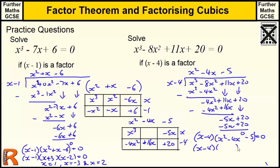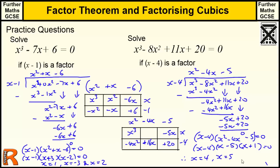Factorising the quadratic bracket: we need numbers that multiply to give minus 5 and add to give minus 4 — that's minus 5 and plus 1. So x minus 4 times x minus 5 times x plus 1 equals 0, therefore x equals 4, x equals 5, and x equals minus 1.